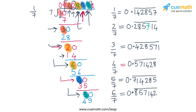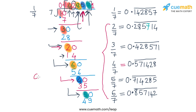So just from the cyclic pattern in the long division of 1 by 7, we can figure out the decimal expansions of 2 by 7, 3 by 7, 4 by 7, 5 by 7, and 6 by 7. This concept is really awesome, and if you want to delve deeper, do some research online on cyclic numbers.